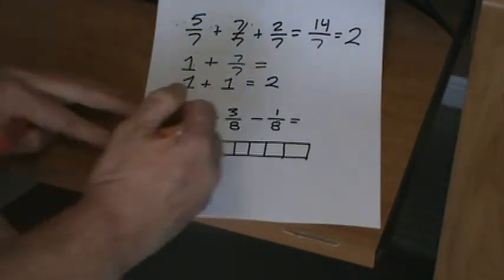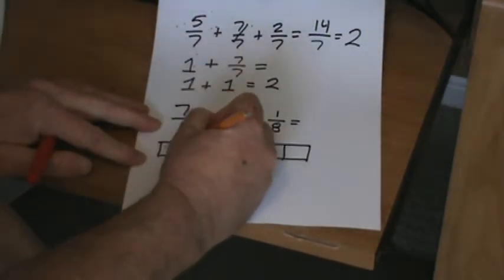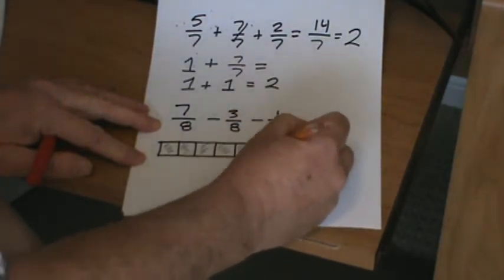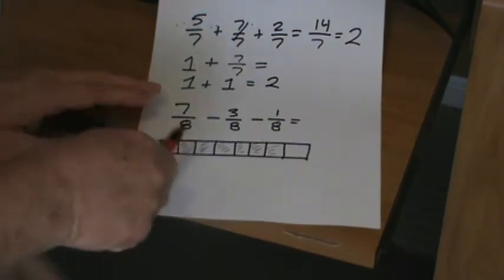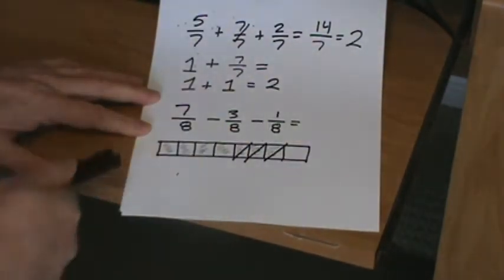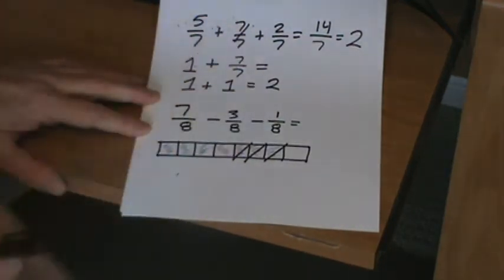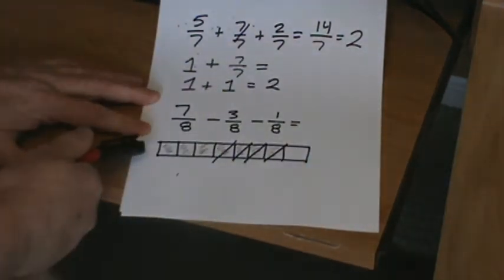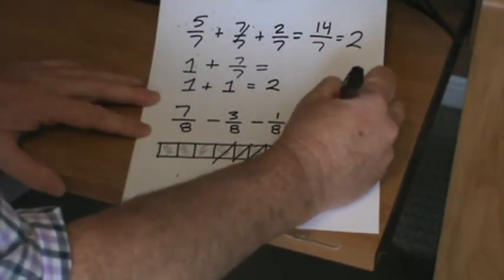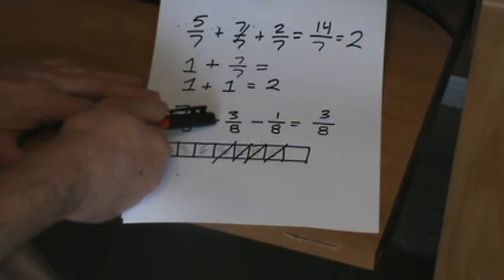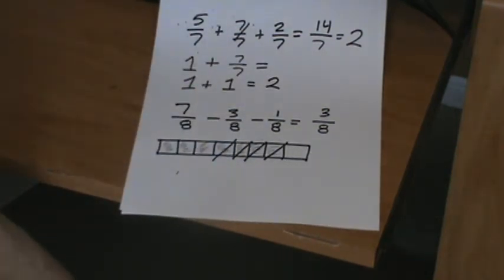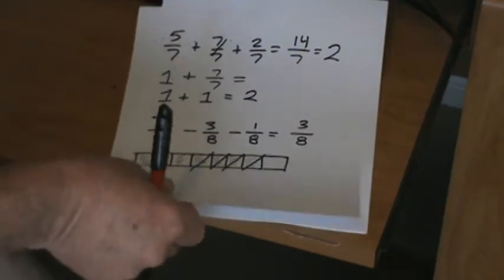We're starting out with 7/8, so let's color in 7. 1, 2, 3, 4, 5, 6, and 7. So there's our 7/8. Now we're going to subtract 3/8. We're left with 4/8. And then we still have to subtract that 1/8. We could just go 7 - 3 is 4, 4 - 1 is 3, and we'd have 3/8.